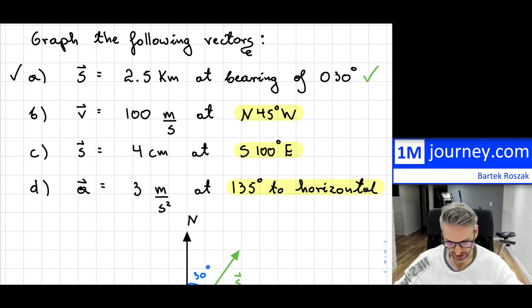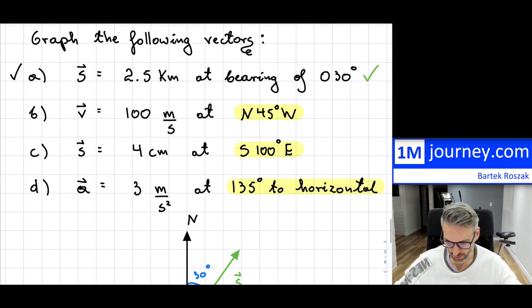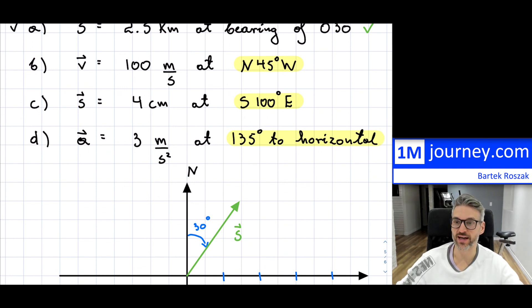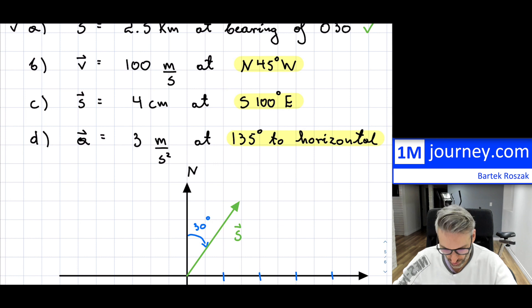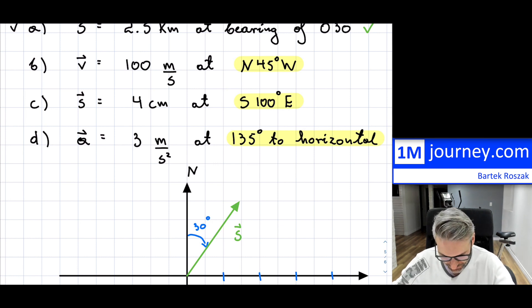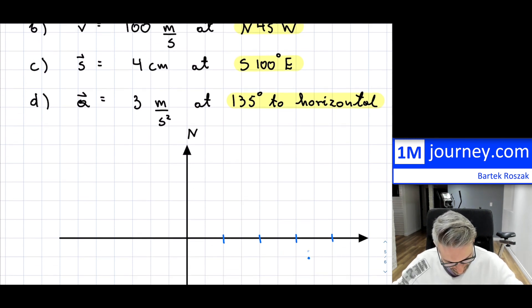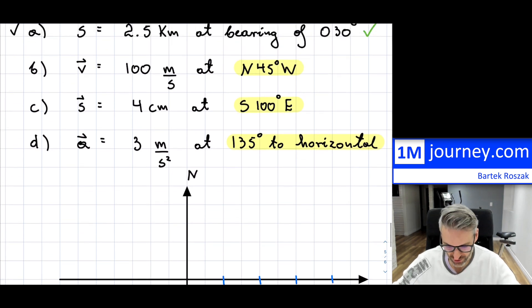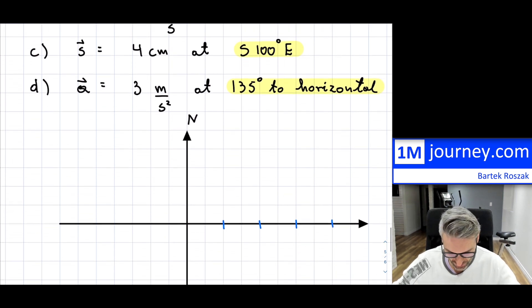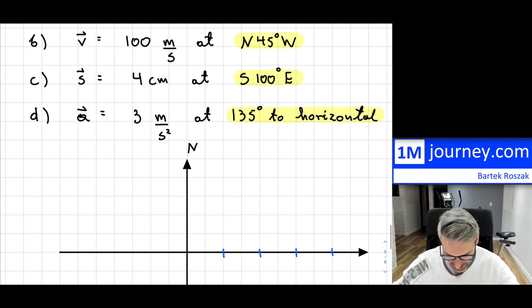All right, so now moving on to the second example. So this one is a little bit different — we're going to be shifting in here. Let's start from scratch. This is 100 meters per second.